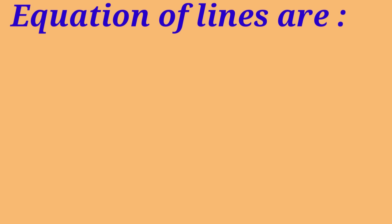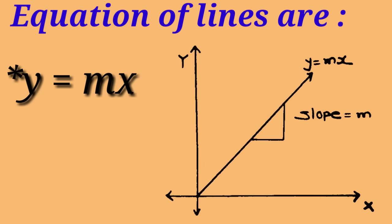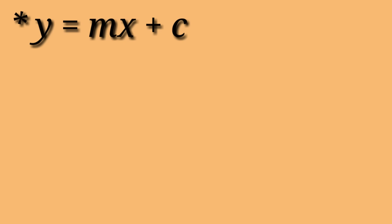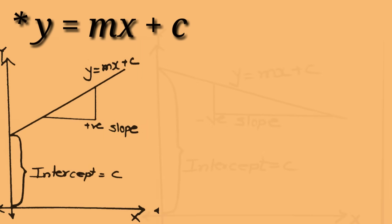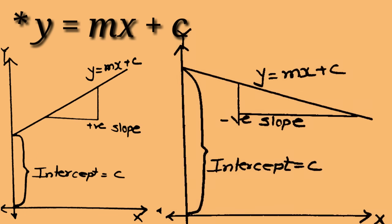Students, as we have studied earlier in our lower classes about equations of lines, they are either y equals to mx, which represents a line passing through origin and having slope m, and another is y equals to mx plus c, which represents a line having intercept c on the y-axis. These lines can be with positive slope or with negative slope.